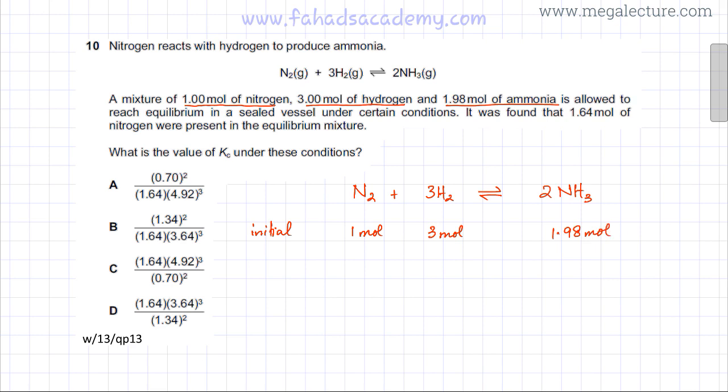Once they've been added in the sealed vessel, forward reaction or backward reaction would occur. If more forward reaction occurs the amount of reactants decreases and the amount of products increases and vice versa. So equilibrium would be set up. Eventually a time would reach when the rate of forward equals the rate of backward reaction. Once the equilibrium has been reached, it was found that 1.64 moles of nitrogen were present in the equilibrium mixture.